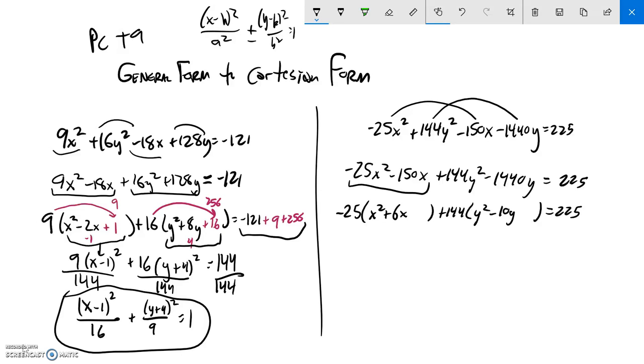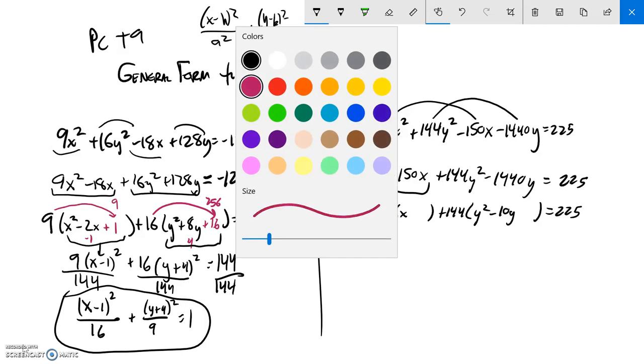Great. And so then now, notice all that I did there was I did those divisions so that I could get a leading coefficients of 1 here and here. All right. Let's keep going from here. So now I'm going to complete the square in here.